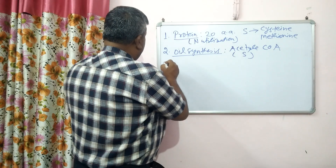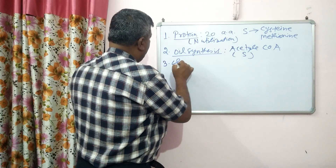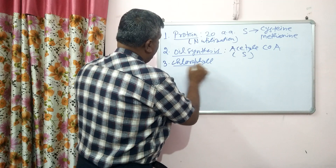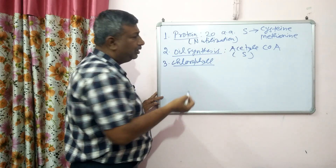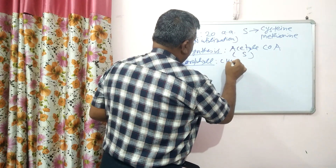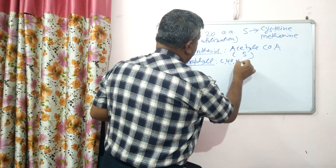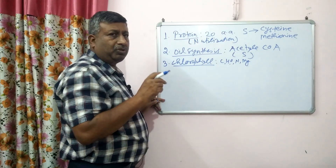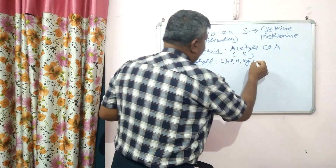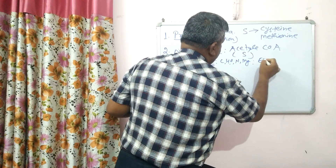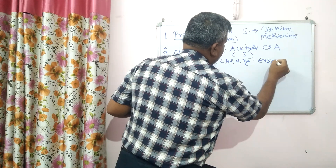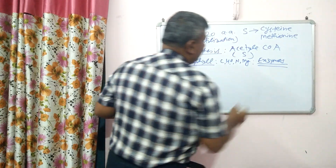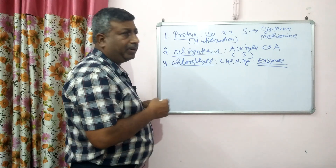If there is more oil synthesis, plants require more sulfur. The third function is that sulfur is involved in chlorophyll formation. In chlorophyll, carbon, hydrogen, oxygen, nitrogen, and magnesium are directly involved as constituents, and sulfur is not a direct part of chlorophyll. However, chlorophyll is formed in many steps catalyzed by enzymes, and these enzymes are activated by sulfur.